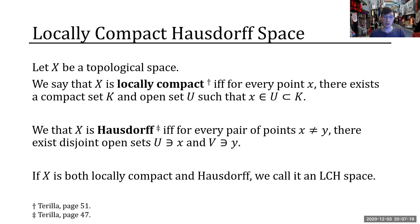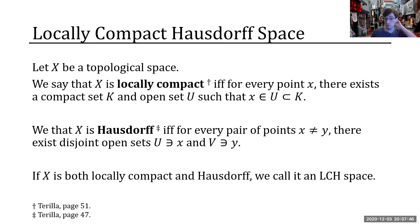First we need to define the kinds of topological spaces we're interested in. We say that a topological space is locally compact if for every point in the space there is some compact set containing the point with a non-empty interior — more technically, you have an open set inside your compact set that also contains your point. This is important because we want compact sets which are non-trivial in some sense.